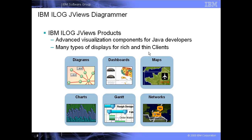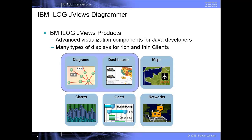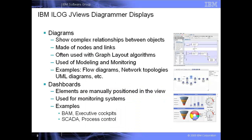The focus of today's presentation is JVUES Diagrammer. This product can be used to create two distinct types of displays: diagrams and dashboards. A diagram is a picture showing relationships between objects. Classic examples of diagrams include a flowchart, a UML diagram, a business process, a network topology, or an org chart.